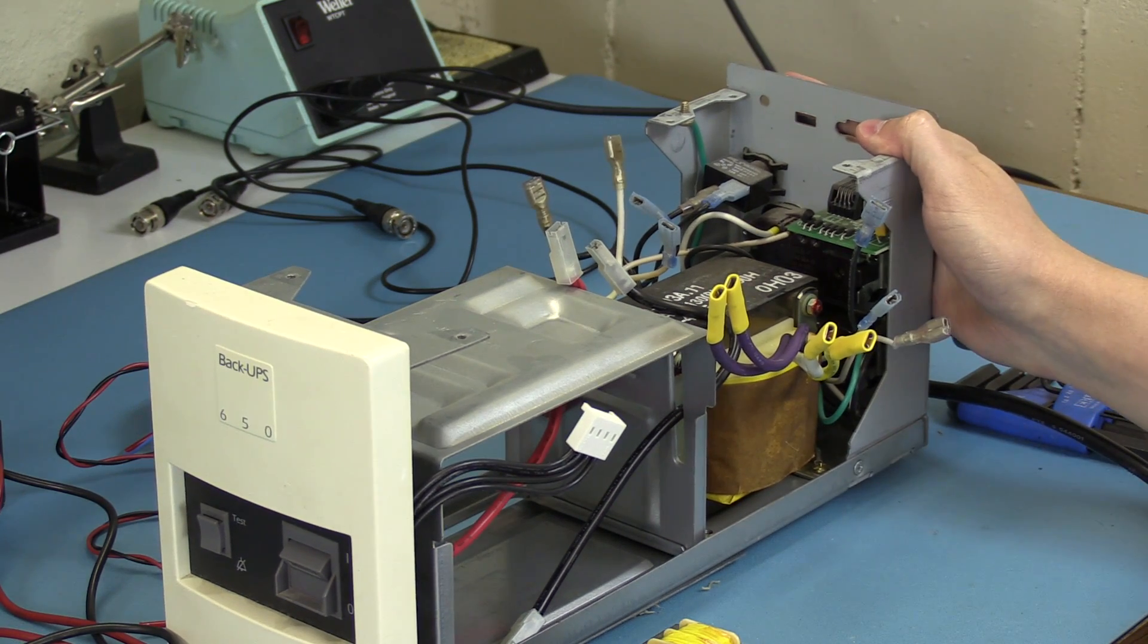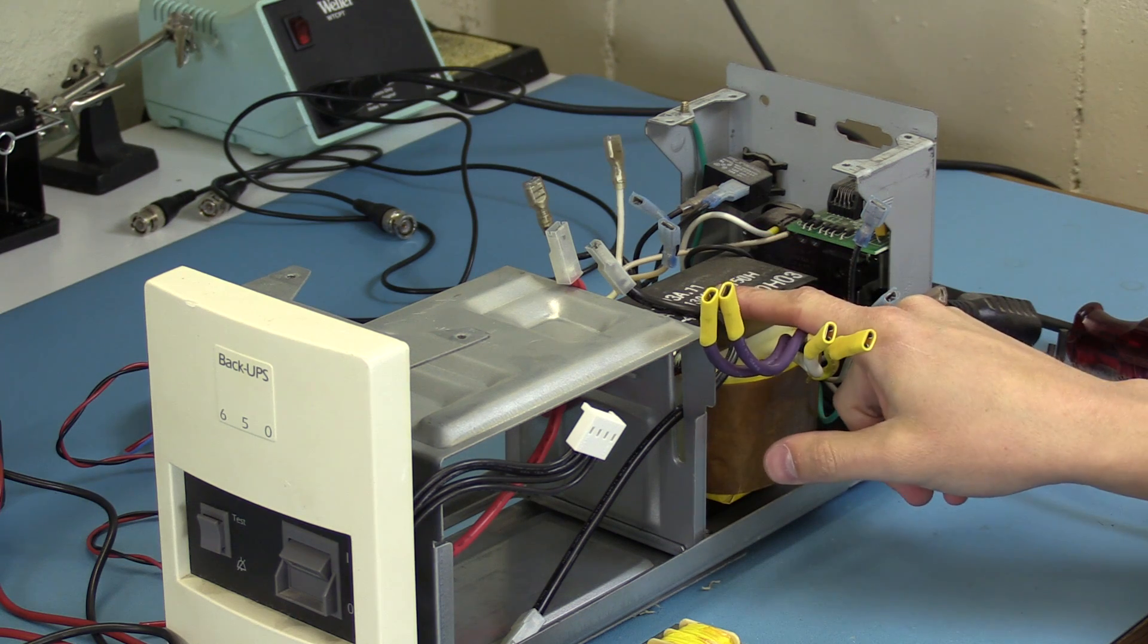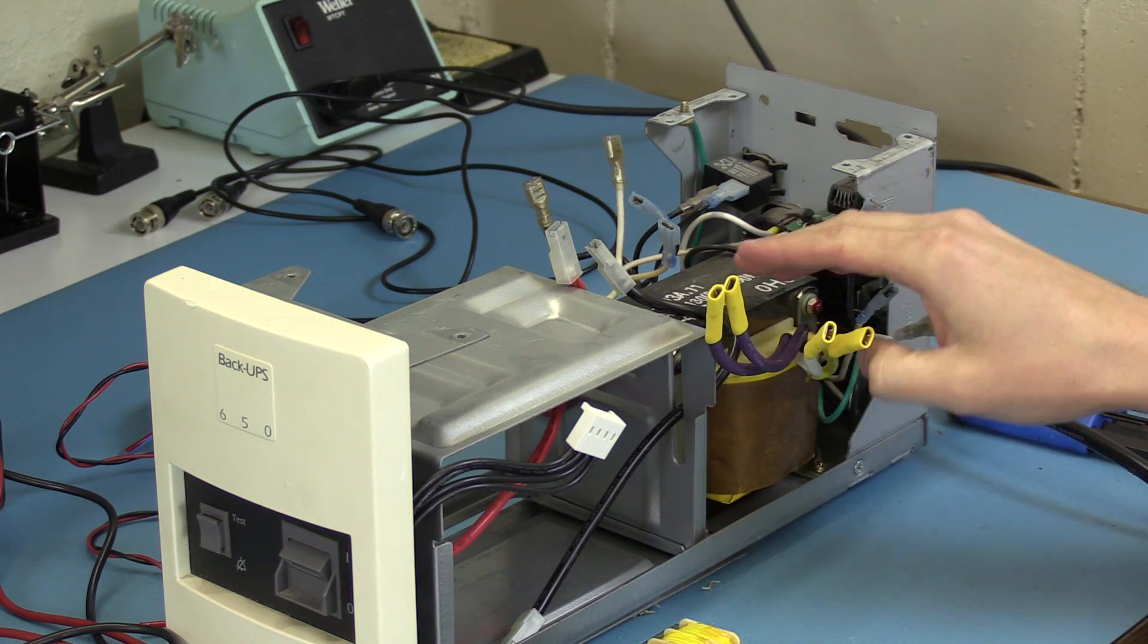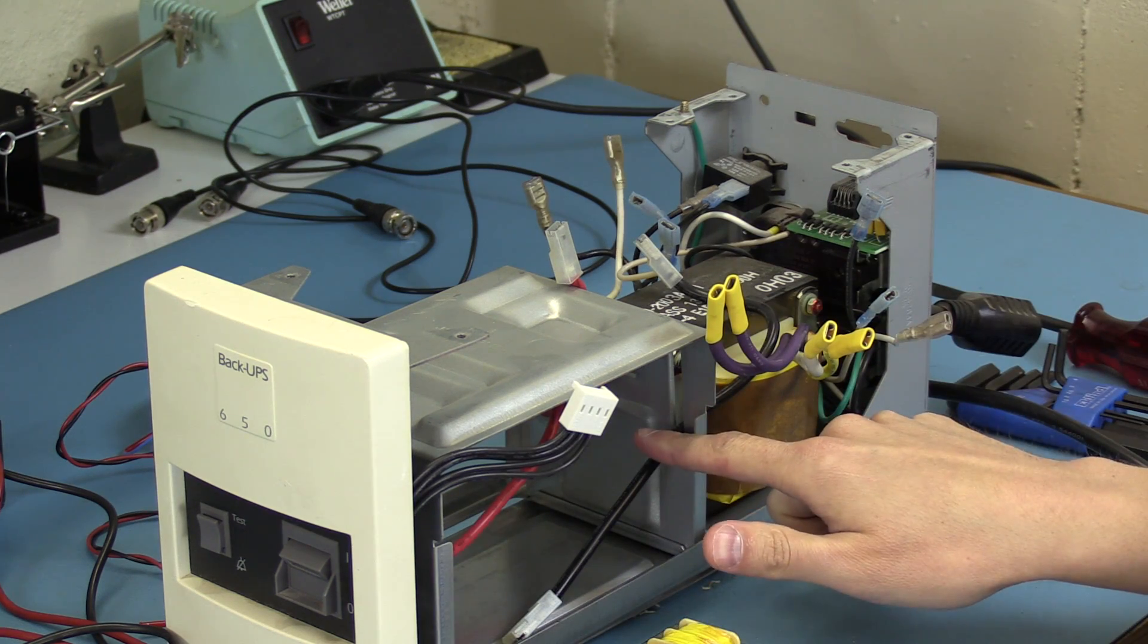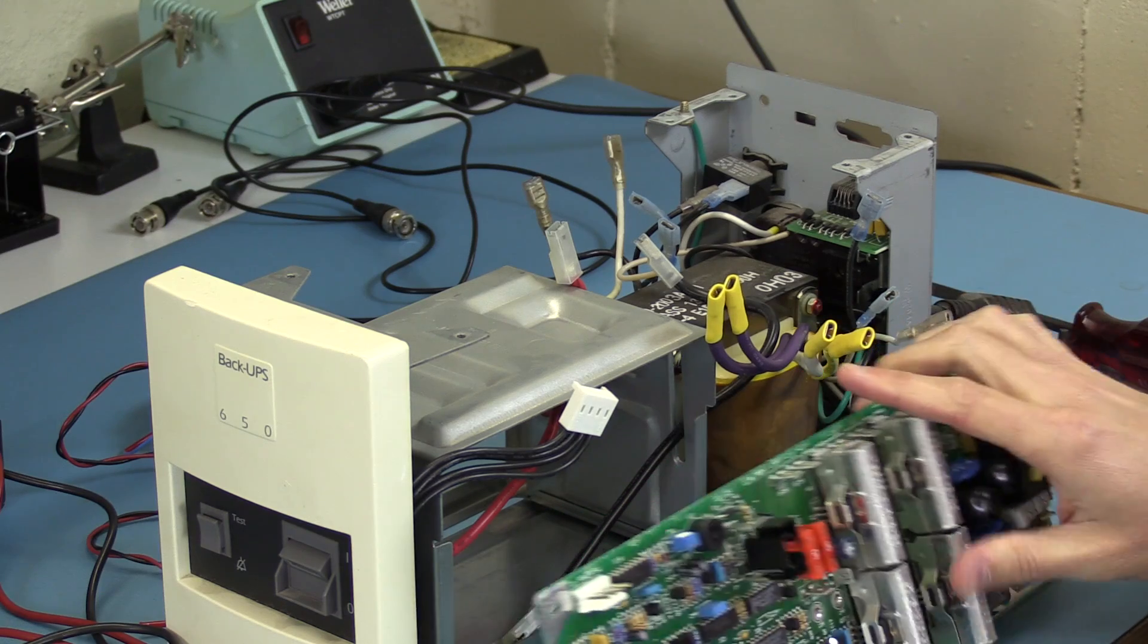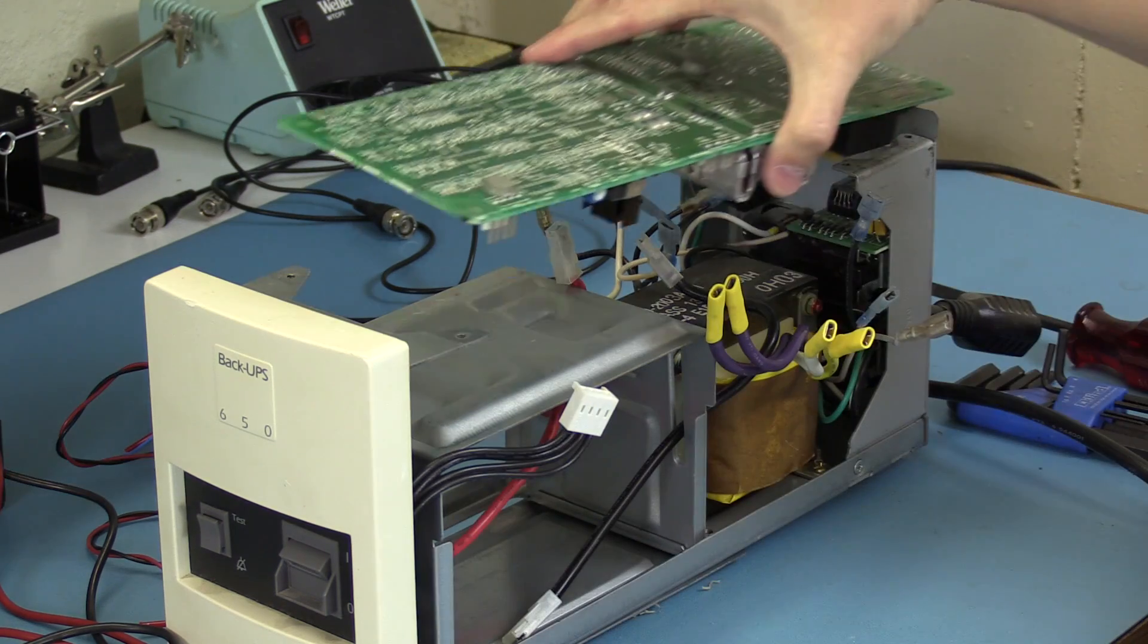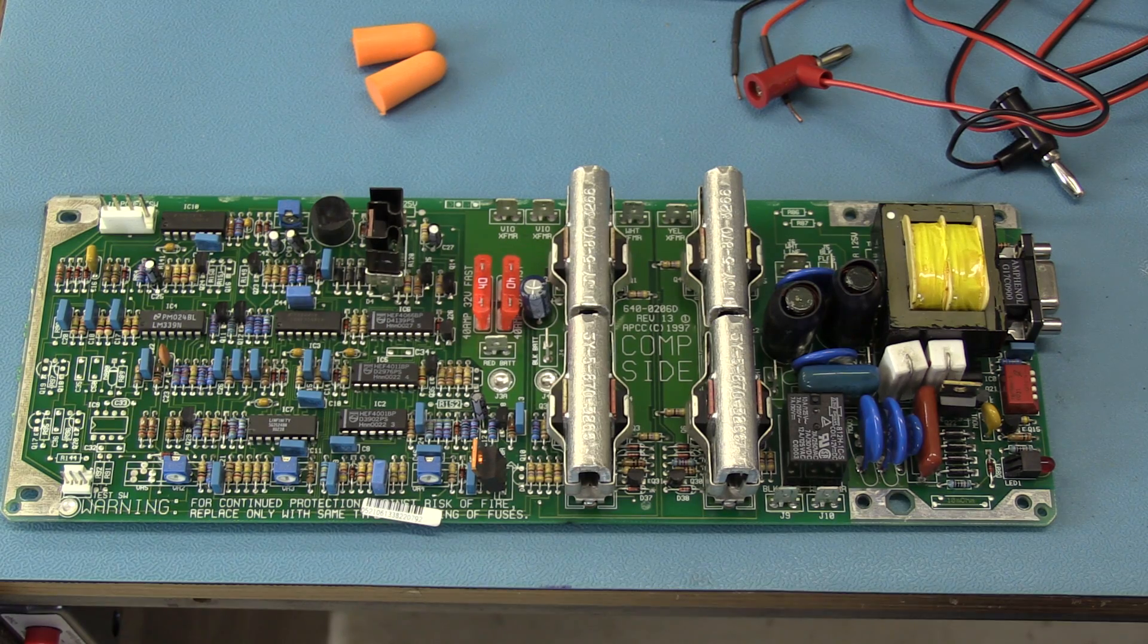As you can see, it's got a nice metal enclosure. This big transformer is only used by the inverter. No line interactive on this old beast. There's a nice space for the battery here, and just this one big PCB for everything else. It sits in here like so. Let's take a look at the board.